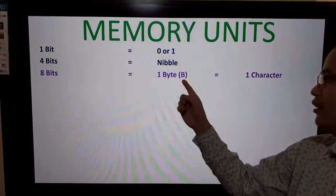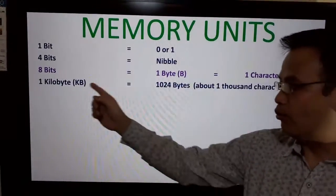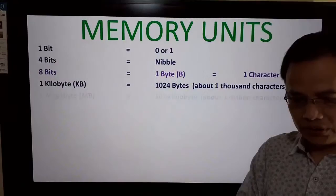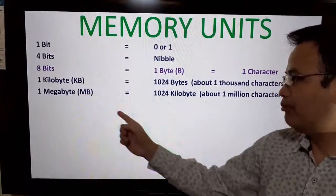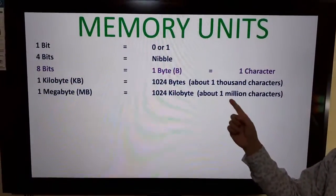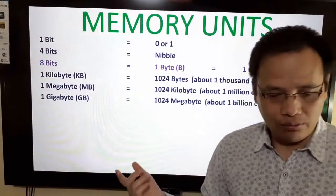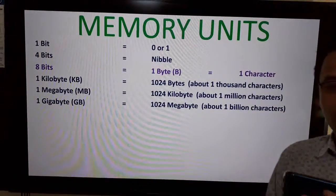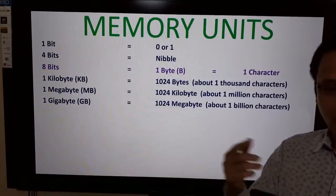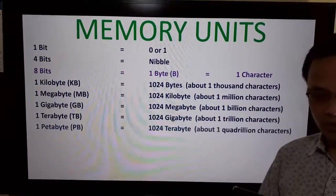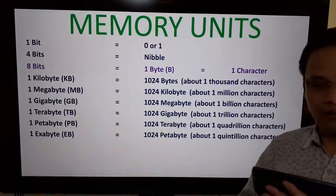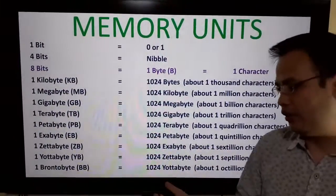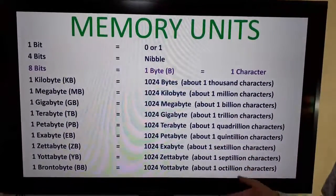Eight bits make one byte, equivalent to one character. One kilobyte (KB) is equal to 1024 bytes, about 1000 characters. One megabyte (MB) equals 1024 kilobytes, about 1 million characters. One gigabyte (GB) equals 1024 megabytes, equivalent to about 1 billion characters. Then come terabyte (TB), petabyte (PB), exabyte, zettabyte, yottabyte, brontabyte, and so on.